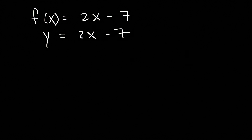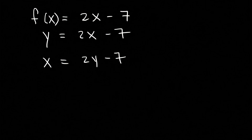Now, in your next step, switch x with y. So x is equal to 2y minus 7. And then after this step, all you need to do is isolate the y variable, solve for it. Get it by itself on one side of the equation.